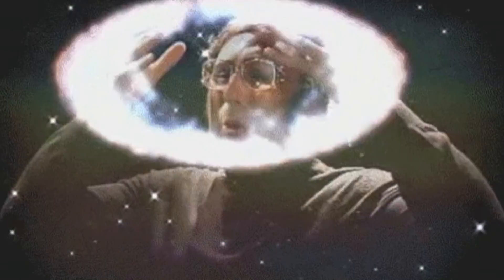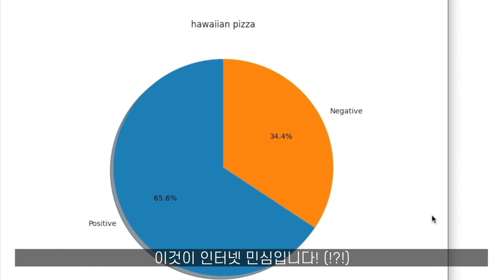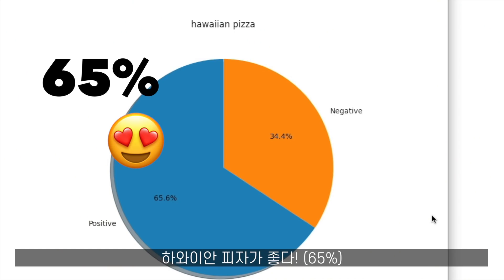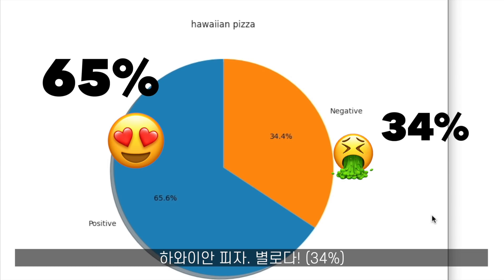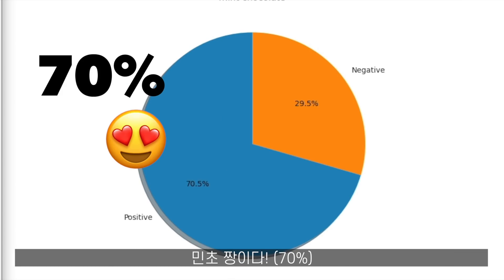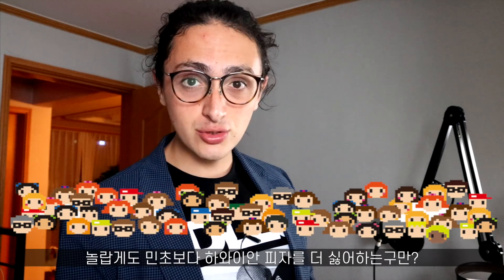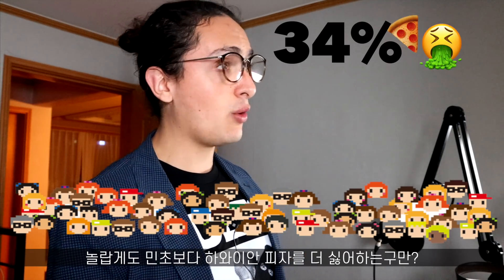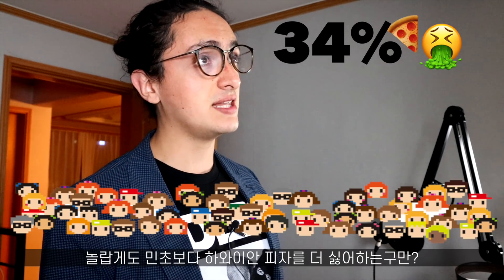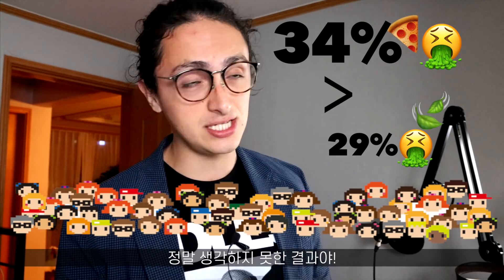The results are in. Hawaiian pizza: positive 65 percent, negative 34 percent. Mint chocolate: positive 70 percent, negative 29 percent. Wow — I thought people were going to hate mint chocolate more, but actually people dislike Hawaiian pizza more than they dislike mint chocolate, and that's interesting.